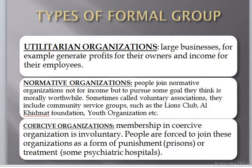Types of formal groups: First, utilitarian organizations, like large businesses, for example, which generate profit for their owners and income for their employees. Second, normative organizations — people join normative organizations not for income but to pursue some goal they think is morally worthwhile.